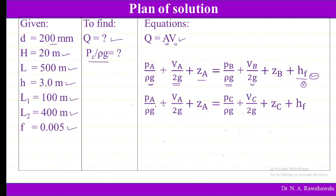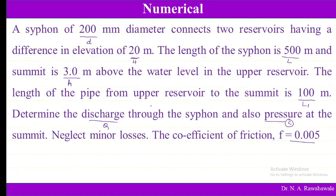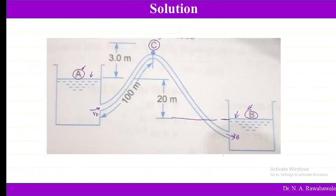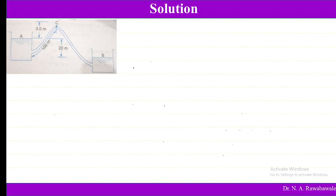When applying Bernoulli's equation between points A and C, pressure at A is atmospheric whereas at point C the pressure is vacuum pressure created by the suction from the flowing liquid. So the pressures are not going to be the same, and from this we can find out the pressure at point C.